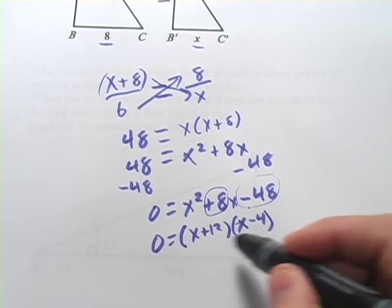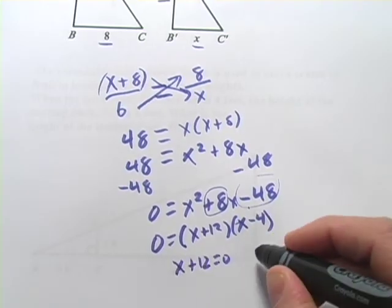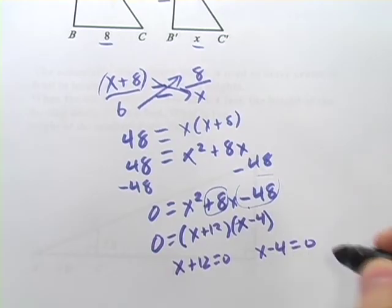So to solve for X, we set each of these factors equal to 0. So X plus 12 equals 0 and X minus 4 equals 0.